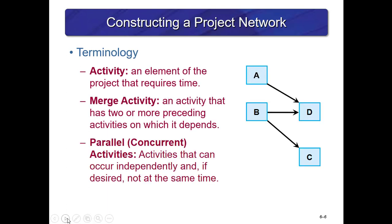Important terminology for this chapter: an activity is an element of the project that requires time, shown by a box with a letter on it. A merge activity is an activity that has two or more preceding activities on which it depends — D would be considered a merge activity because it has predecessors A and B leading into it. This also shows parallel and concurrent activities, which can occur independently and not necessarily at the same time because they have no dependencies on each other.